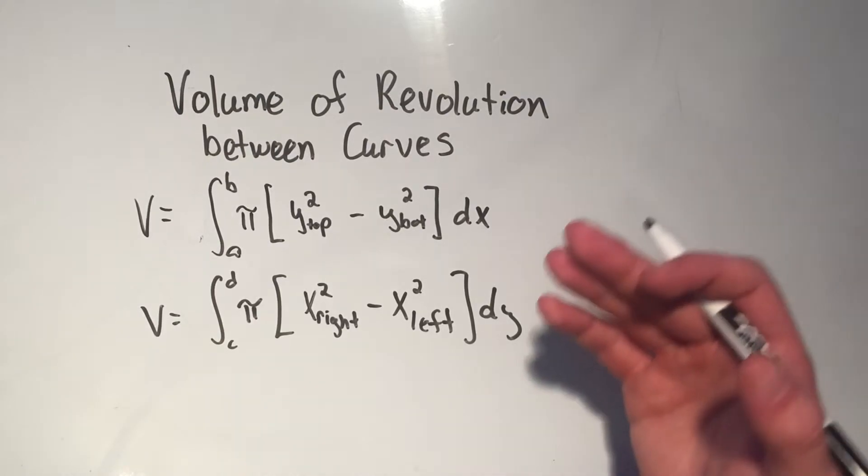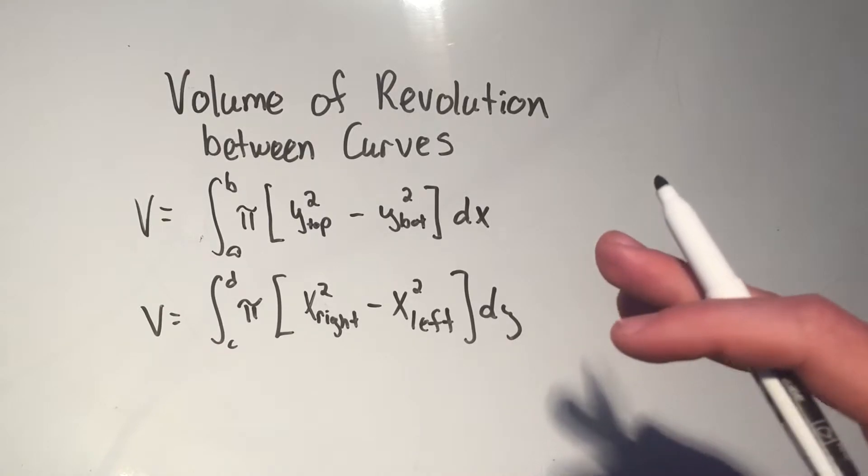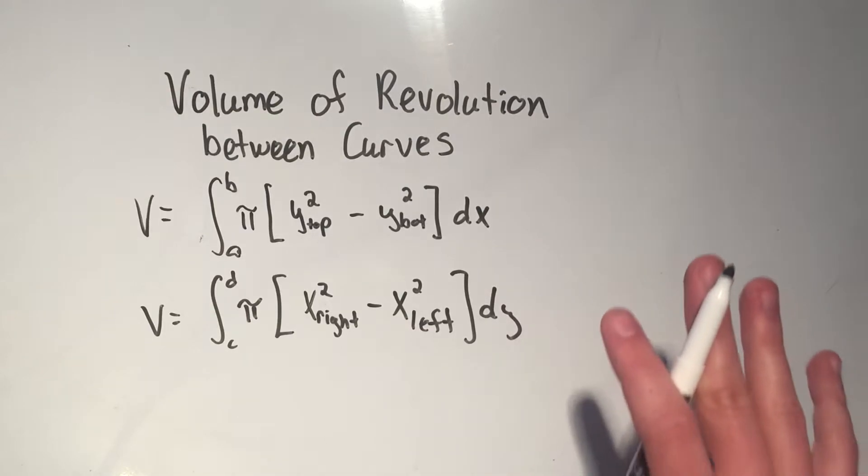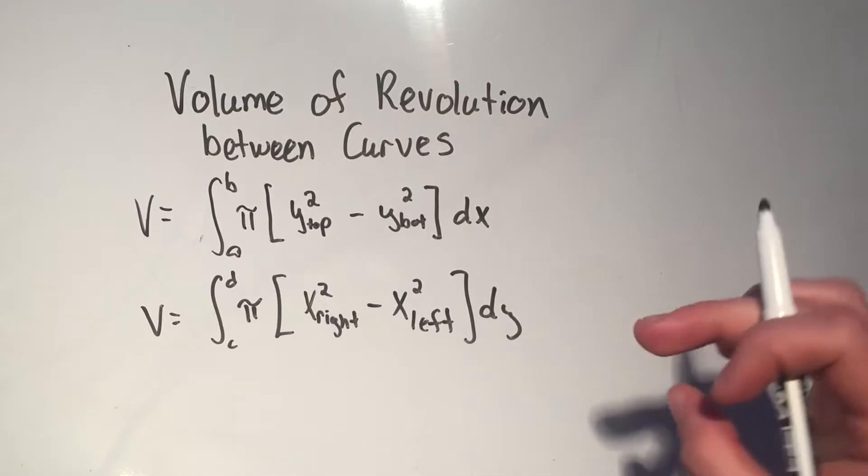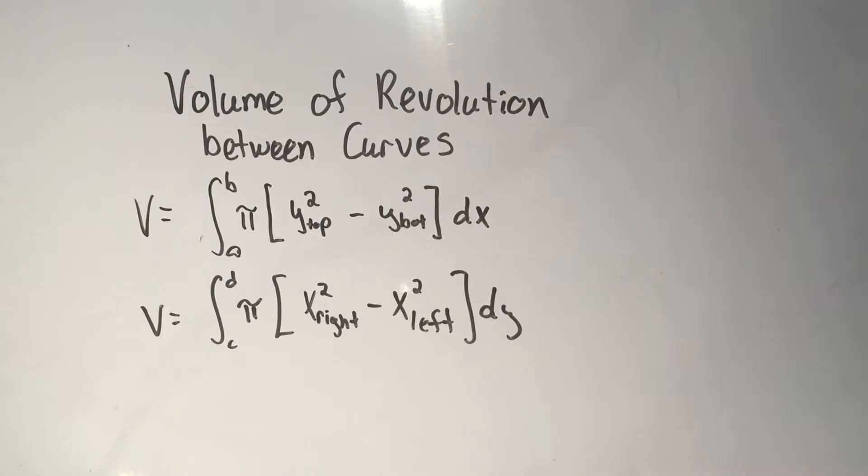When you're doing volumes of revolution problems, they're not always going to be just one curve revolving around the axis. Sometimes they're going to be a little bit harder, and sometimes they're going to say, well, do it between two curves. So revolve around this axis, but I only want the volume between two curves.